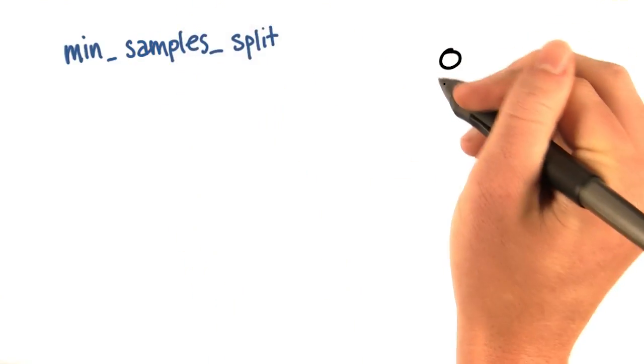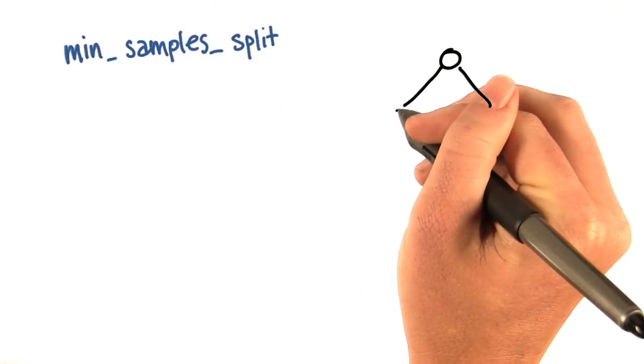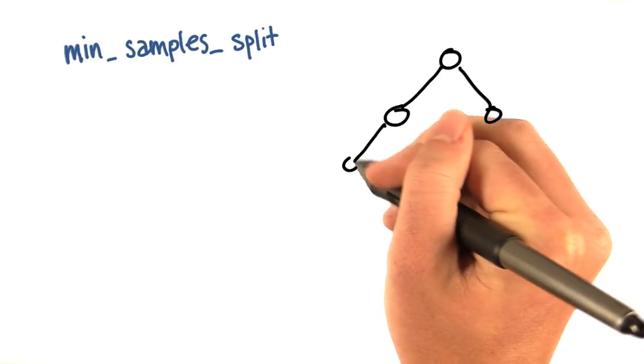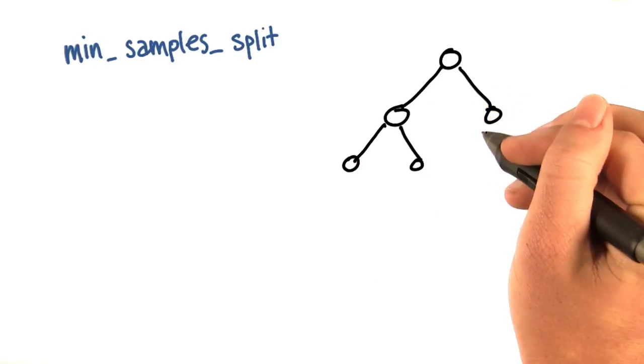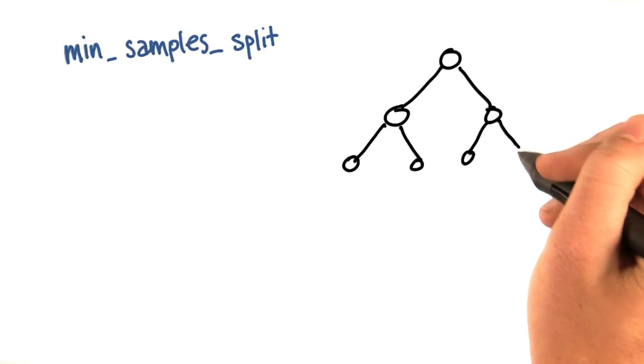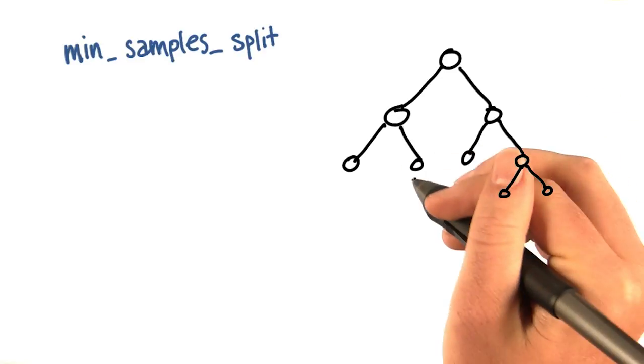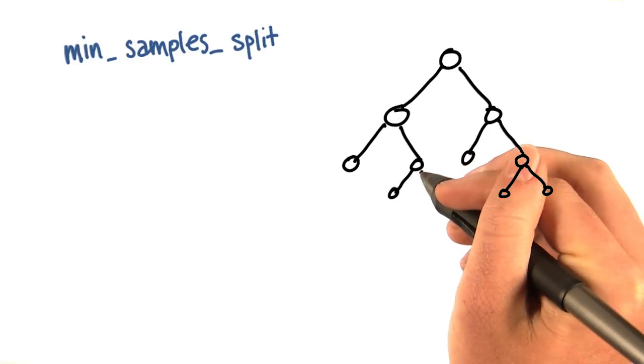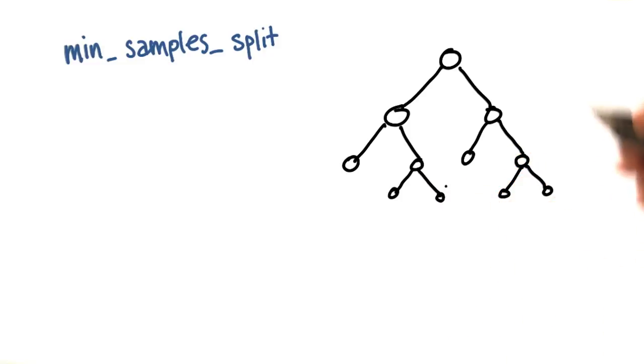Say I have my decision tree, start out with a bunch of training examples, and then I start to split them into smaller subsamples. At some point I have to figure out if I'm going to keep splitting any further.